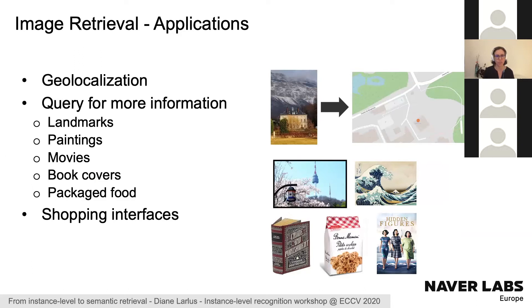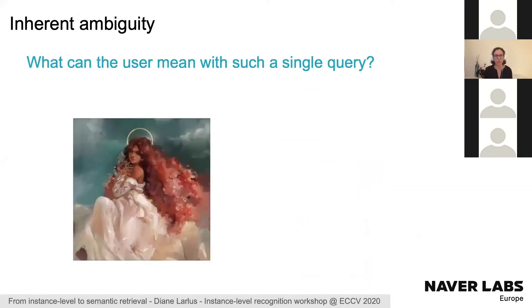Image retrieval has many practical applications. For example, if you have a photograph of a building you've never seen and you want to locate it on a map, you can query a database of buildings with GPS information. This approach can also be used to get more information about landmarks or paintings, retrieve movie or book reviews, get ingredients of packaged food, and it has been shown to be a powerful shopping interface.